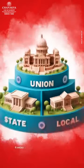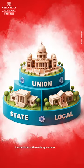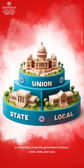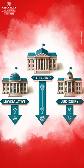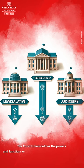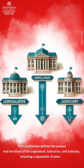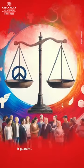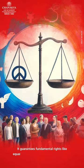It establishes a three-tier government structure: union, state, and local. The Constitution defines the powers and functions of the legislature, executive, and judiciary, ensuring separation of powers. It guarantees fundamental rights like equality, freedom, and justice to all citizens.